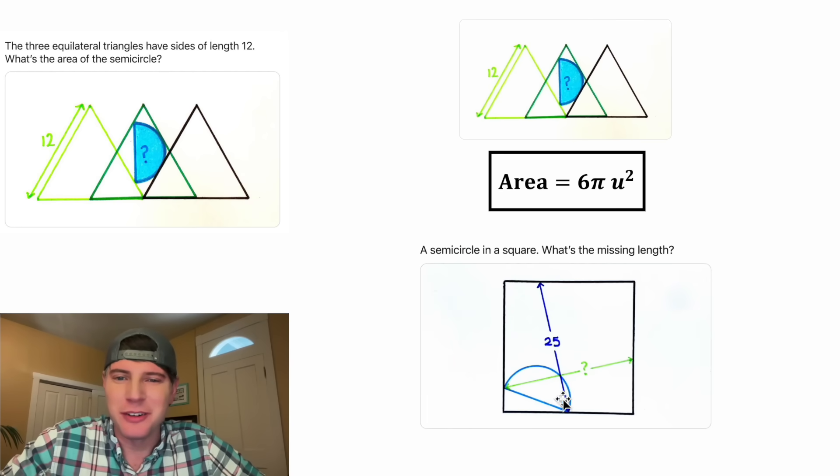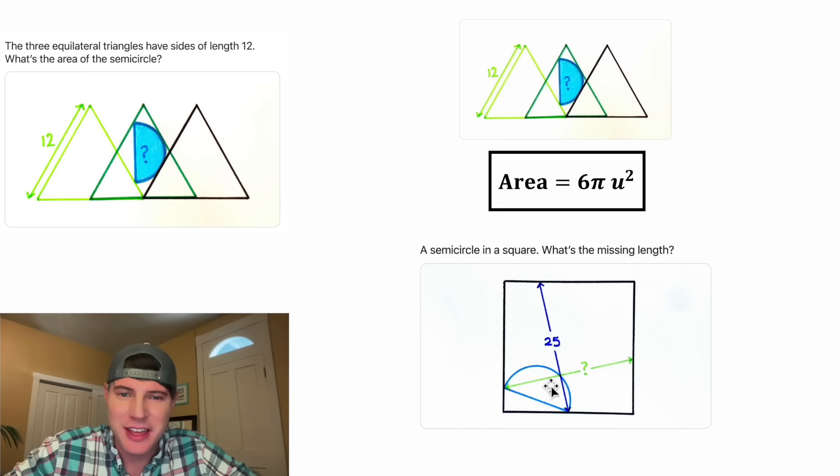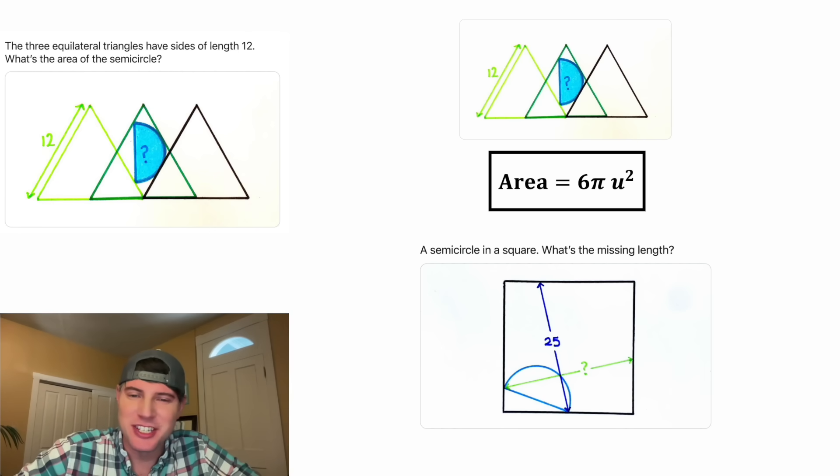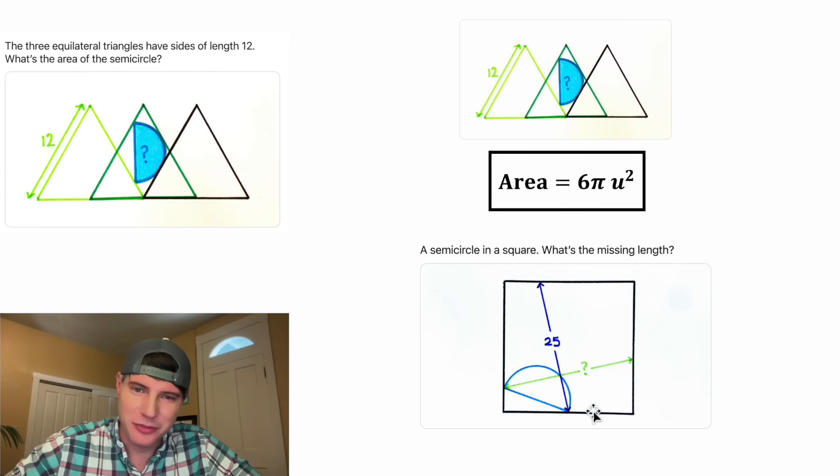And this is the question for day 12. We're given a semicircle inside of a square. We're told this is equal to 25, and this is the question mark. It's asking how long is this distance? This one looks interesting. Is there really enough information here?